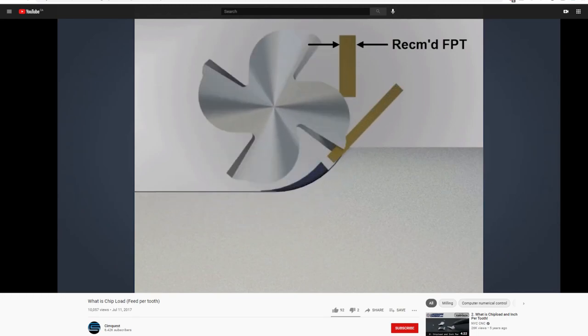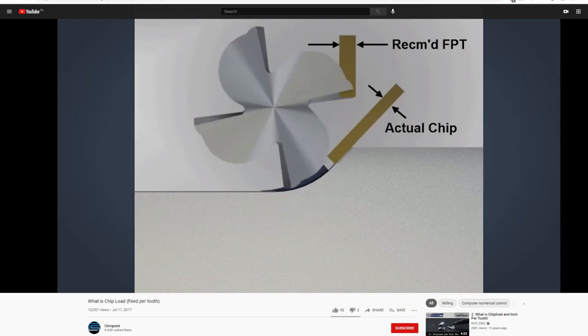If the endmill is only 10% stepped over, notice that the flutes are not taking a fully formed chip, instead they're only taking the small tail end of that ideal chip, which is much thinner than calculated. This is of course not ideal for the endmill if you intended to take the smallest chip possible, because now you're definitely cutting something even smaller.